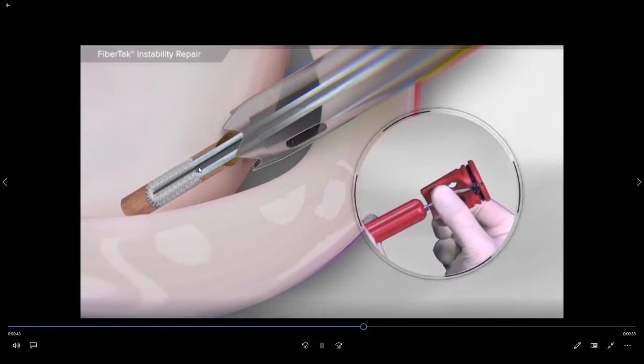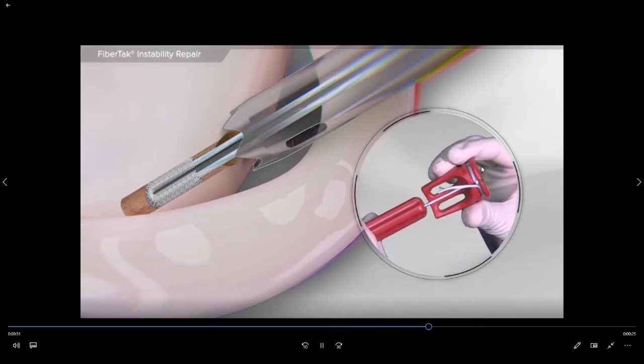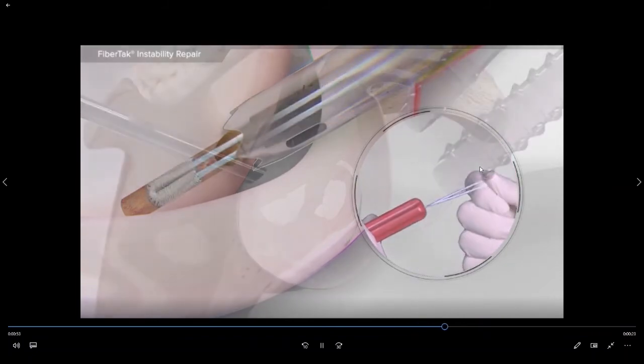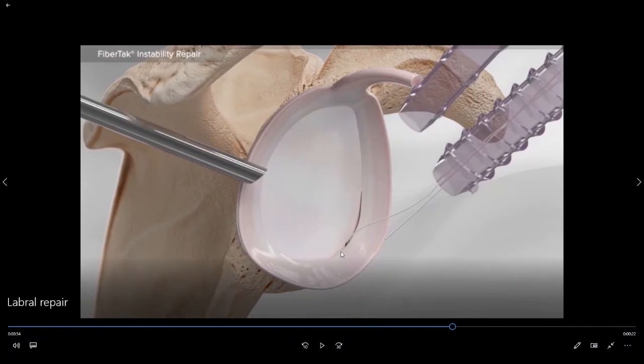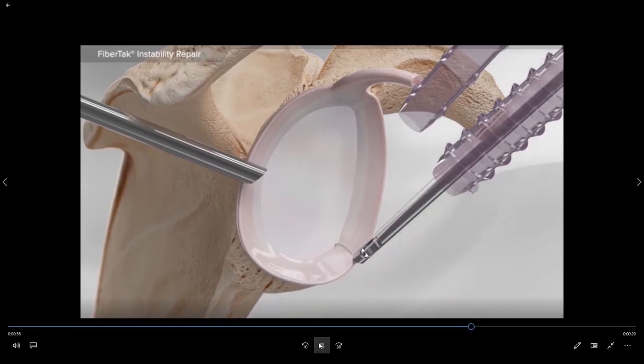Once the implant is in we set it by pulling it backwards. We then simply remove a rubber grommet that holds the sutures and then remove the insertion device. From here we pass a single limb of the suture up and around the adjacent labral tissue and then simply tie the tissue down to the bone.